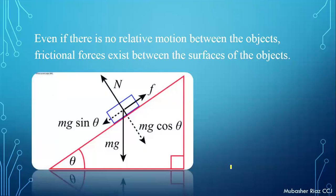For example, there is a wooden block present on an inclined plane. You can note that this is an inclined plane, and here is a block in a state of rest. The question is: why does the block not move downward? Why does it remain at rest? It means there is an opposing force that is preventing this block from moving downward. And that opposing force exists between the wooden block and the surface of the inclined plane.